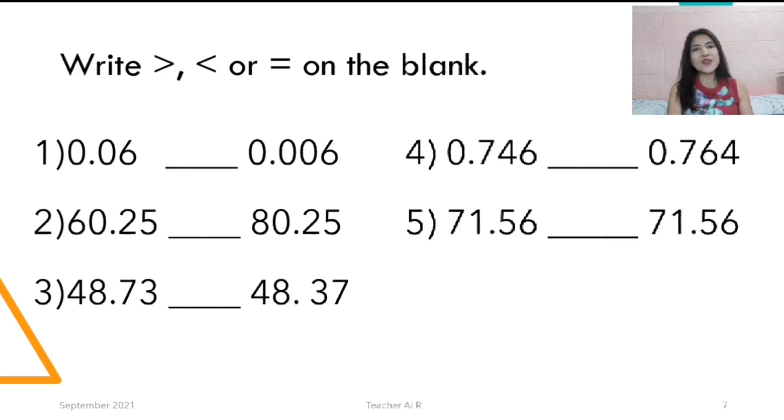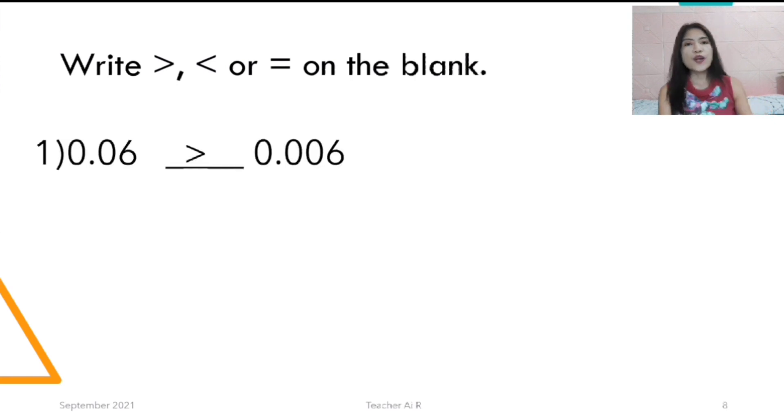Let's have this drill. Write greater than, less than or equal on the blank. You may get a piece of paper and then answer it. If you're done, let's compare them. For number 1, when we compare, the 10th is the same. But 100th, the other one is 6 and the other one is 0. The bigger one is the 0.06. So 0.06 is greater than 0.006.